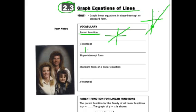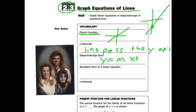The y-intercept is where the line passes the y-axis. Slope-intercept form is y equals mx plus b. Standard form of a linear equation is ax plus by equals c. And x-intercept — if y-intercept is where the line passes through the y-axis, then x-intercept is where the line passes through the x-axis.